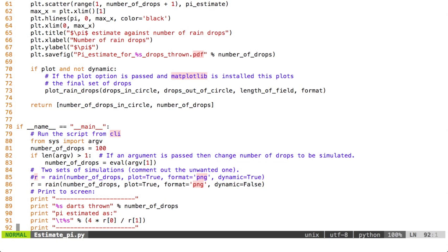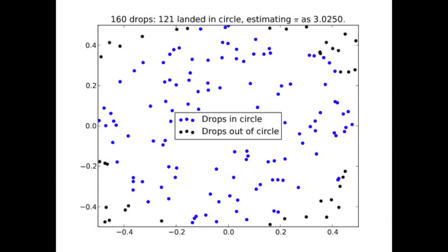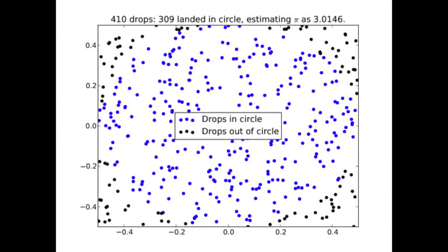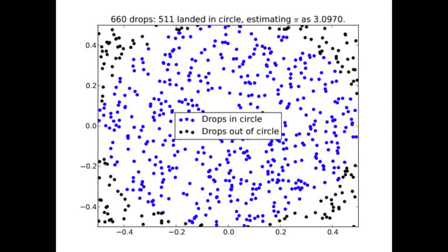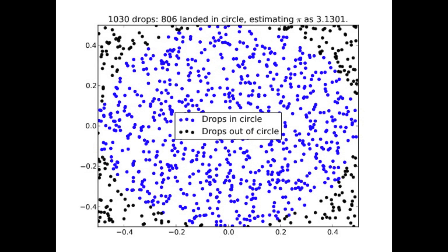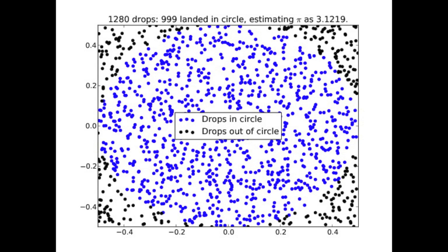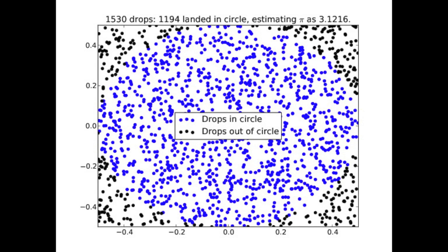And so now we're just going to take a look at this process over time. And so here we see the computer simulating the raindrops falling. So I've got the computer to output the drops that fall in the circle in blue, and the drops that fall outside of the circle in black.